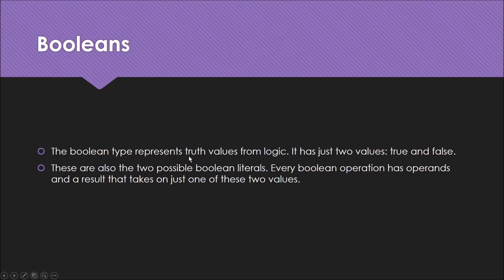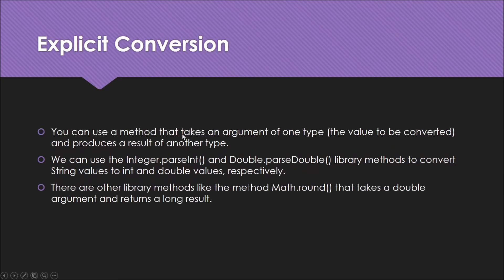For explicit conversion, you can use Integer.parseInt — if you parse an integer value, it will convert that string value into an integer. This can be used to convert one value into another. There's also the method Math.round(), which takes a double argument and returns a long result.